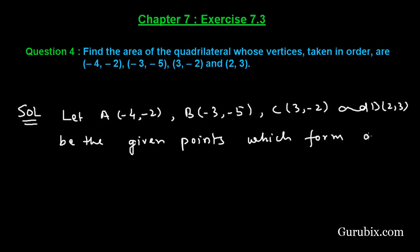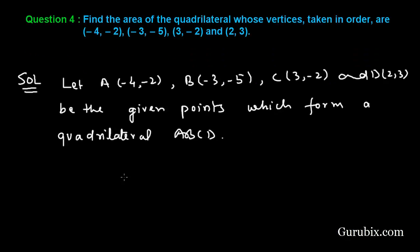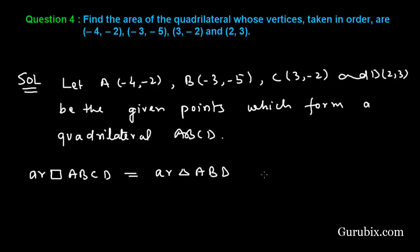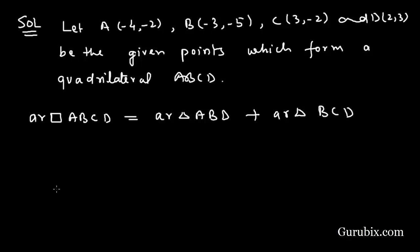These points form a quadrilateral ABCD. We can find the area of quadrilateral ABCD by finding the area of triangle ABD and the area of triangle BCD. First, we shall find the area of triangle ABD.